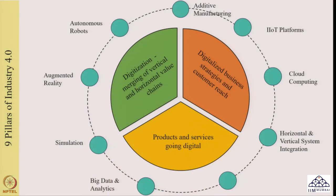In the last session, we discussed about different technologies covered under Industry 4.0. We discussed primarily about the three pillars of Industry 4.0, which includes IIoT — that is Industrial Internet of Things platforms — and focused primarily on Internet of Things, the different types of IoT and their usages. We also discussed about cloud computing, the different models of cloud computing, and strategies of integration across the horizontal and vertical systems.